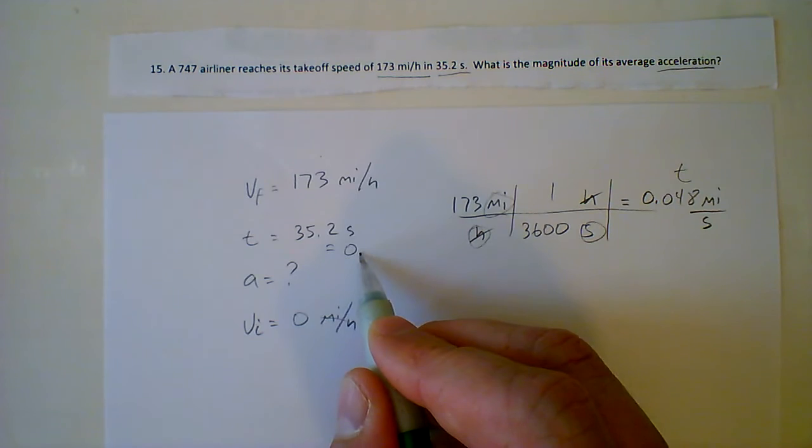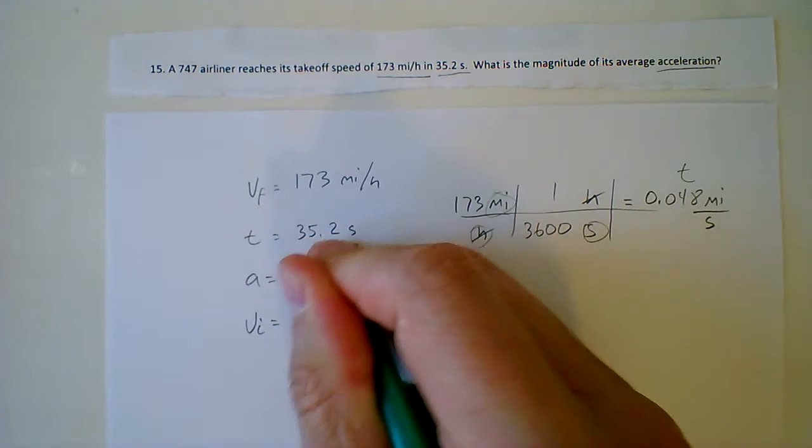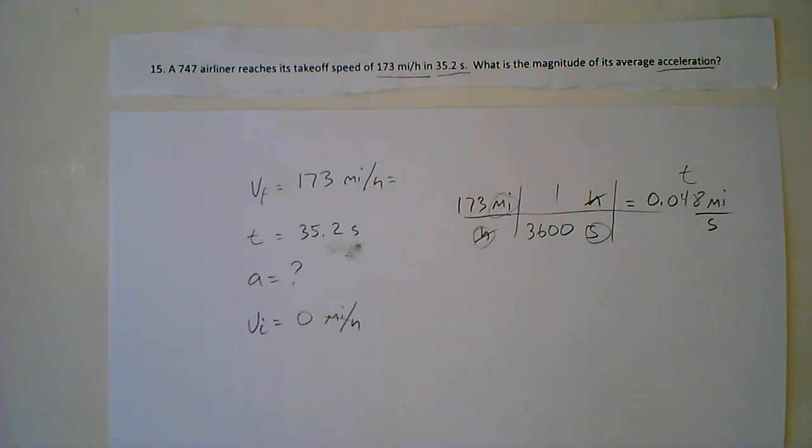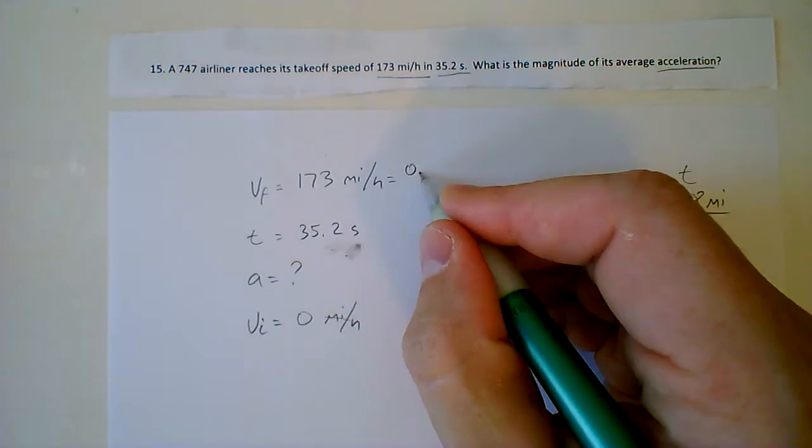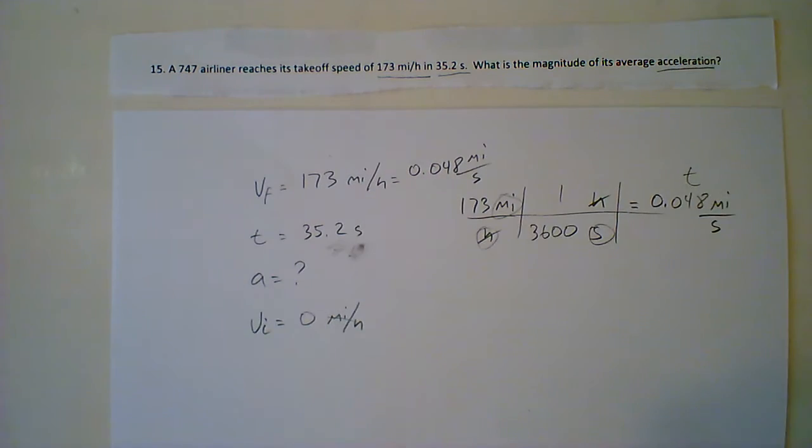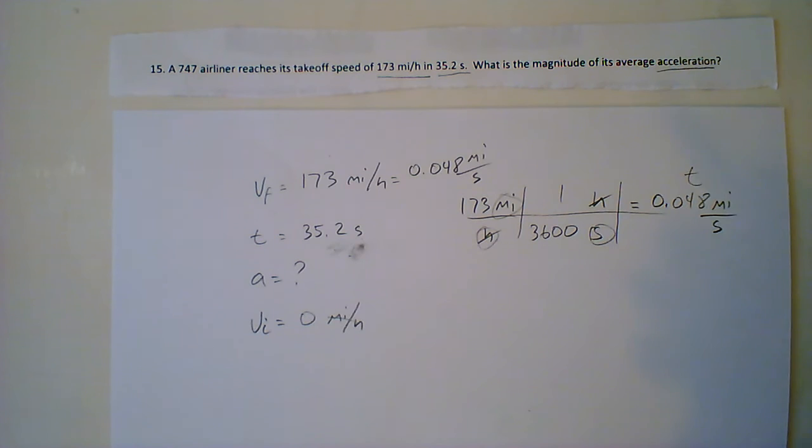The new time is going to be zero. Well, not, sorry, not new time. That's going to be the new velocity. So this is going to be, instead of 173 miles per hour, it's going to be 0.048 miles per second. So now we have seconds that don't conflict with each other.